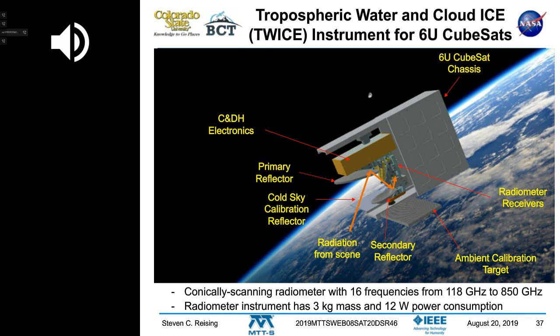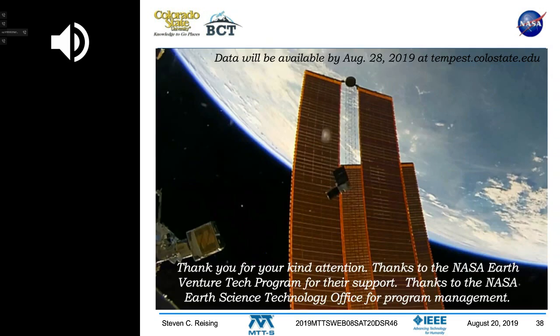TWICE uses 16 frequencies from 118 to 850 GHz and makes measurements of ice cloud particle size by measuring differences at different wavelengths using sub-millimeter wave to terahertz. This radiometer is designed for a 6U CubeSat with 12 watts of power consumption, and we're demonstrating it now.